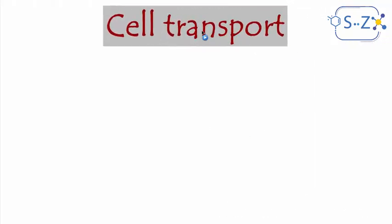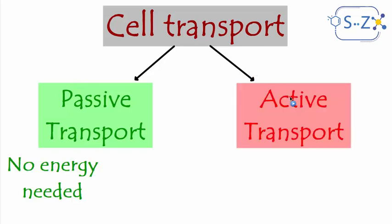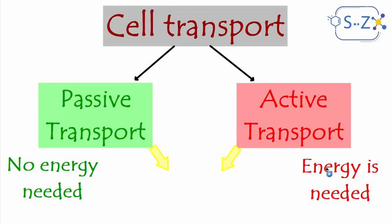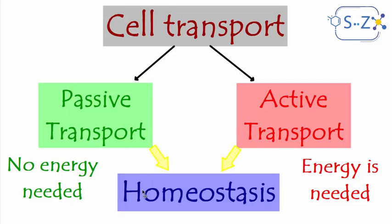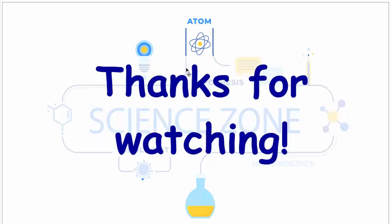Let's wrap up. Cell transport has two types: passive transport, which does not need energy, and active transport, which needs energy. Both types of transport work together to keep homeostasis inside the body. That's all for today — I hope you understood everything. Thanks for watching and goodbye.